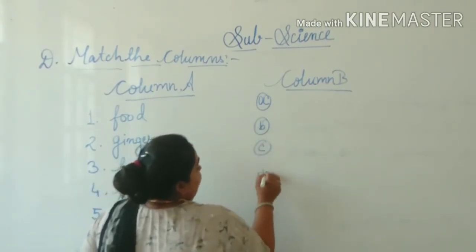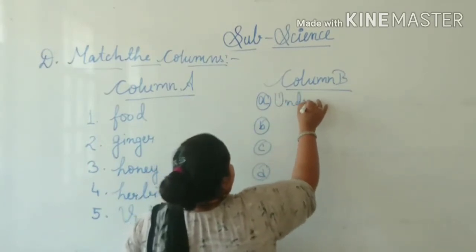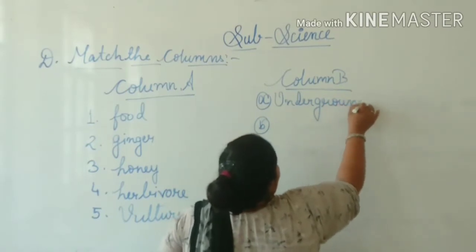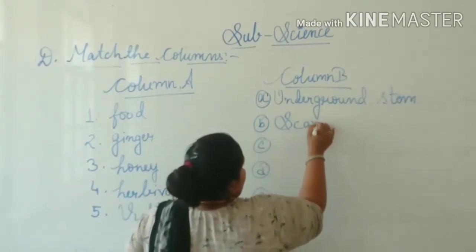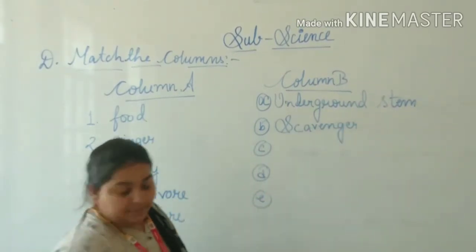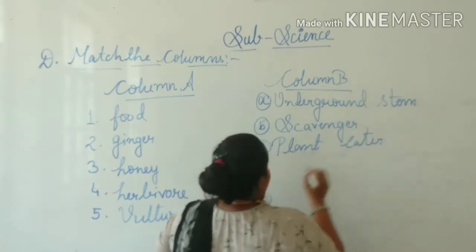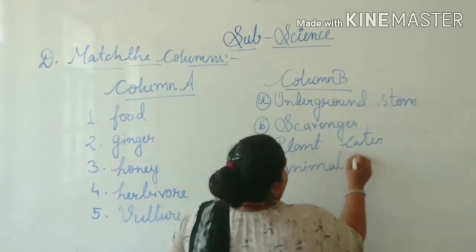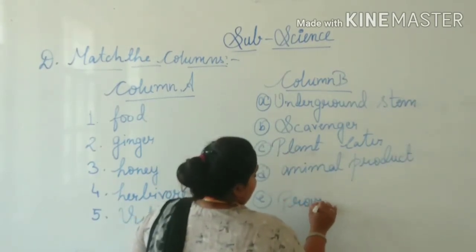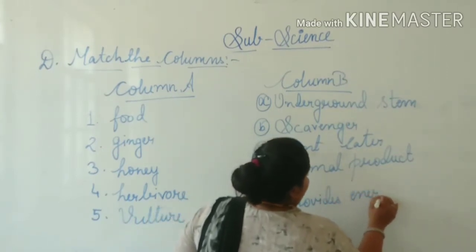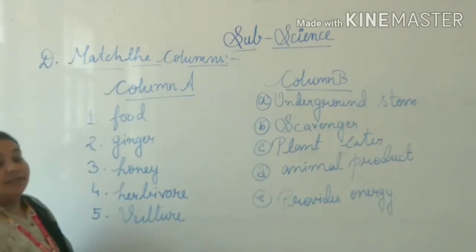So, the five options in column B are: number one, underground stem; number two, scavenger; number three, plant eater; number four, animal product; number five, provides energy. This is our first topic today — match the columns. Now we are going to match each item with the right answer.